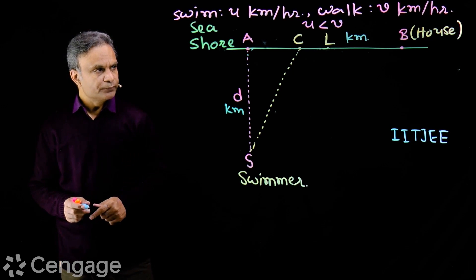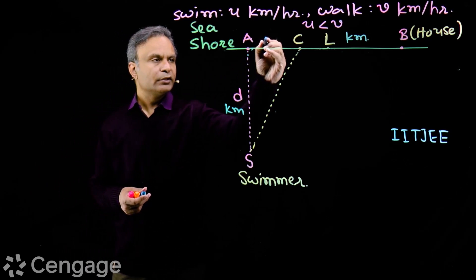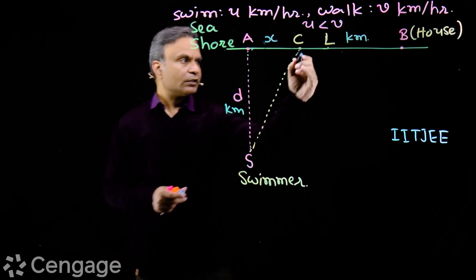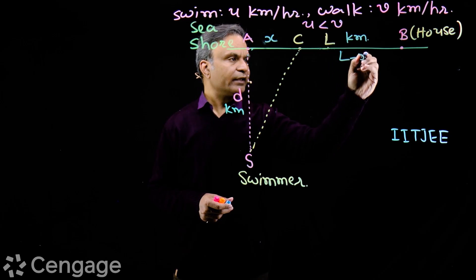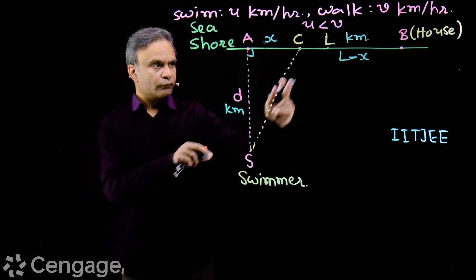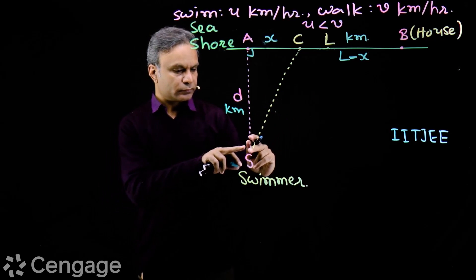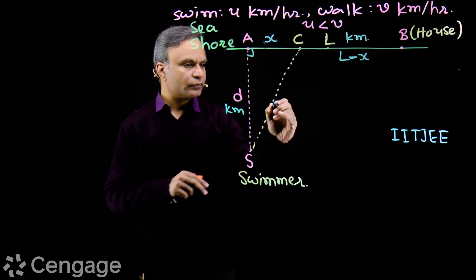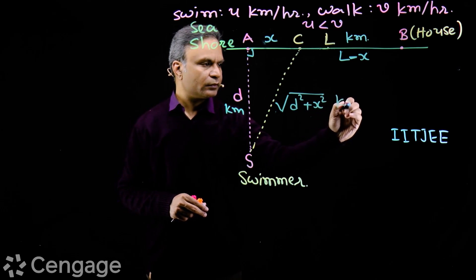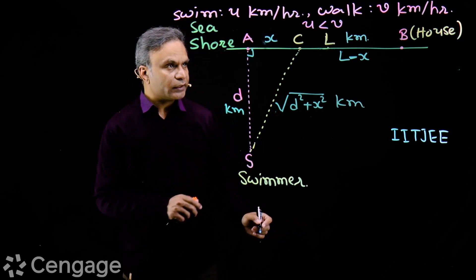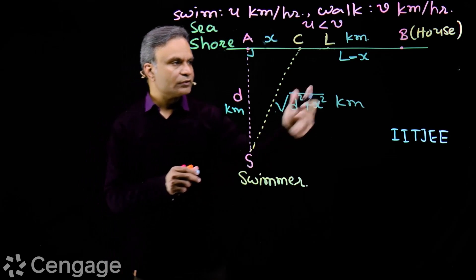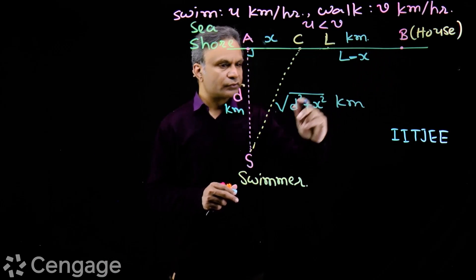Point C is variable, so we introduce a variable here. Suppose AC is x kilometers, then from the right-angle triangle, the swimming distance from S to C will be √(d² + x²) kilometers. That means he swims √(d² + x²) kilometers and walks L minus x kilometers.